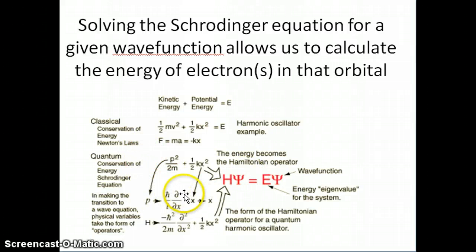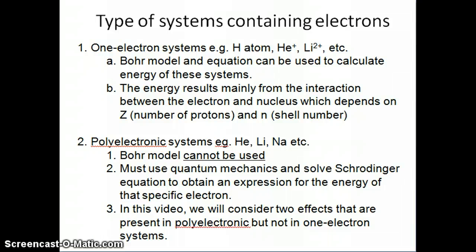Again, not something we'll be doing in this class, but just to have an appreciation for how those energies come from is very useful, so you know that this is how those energies are calculated. Now, in this video, we're not going to make actual calculations, but what we will do - in this topic, I should say - we would consider two effects that are present in polyelectronic systems but not in one-electron systems. And these are things that we call orbital shielding and electron orbital penetration. Both of these are factors that make polyelectronic systems have different energies compared to one-electron systems. But what we're going to do is start to talk about one-electron systems first.